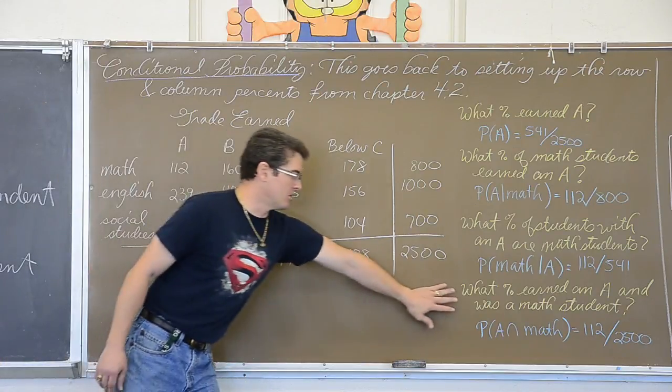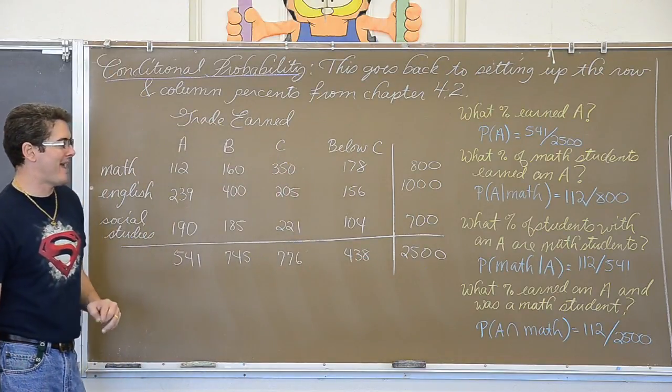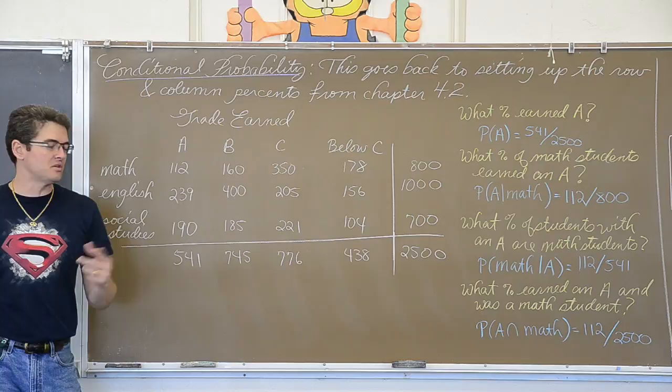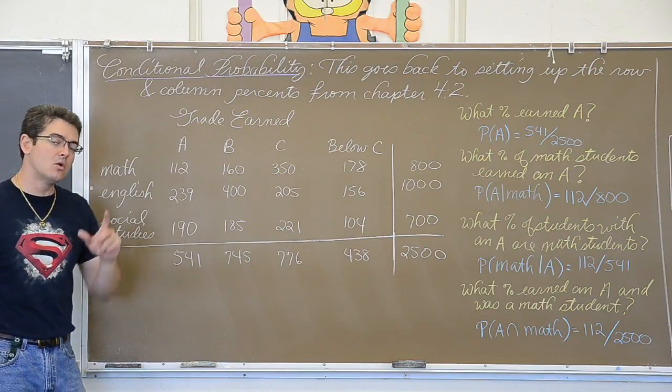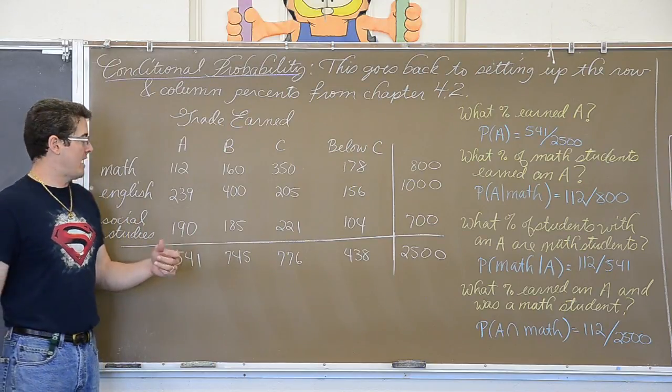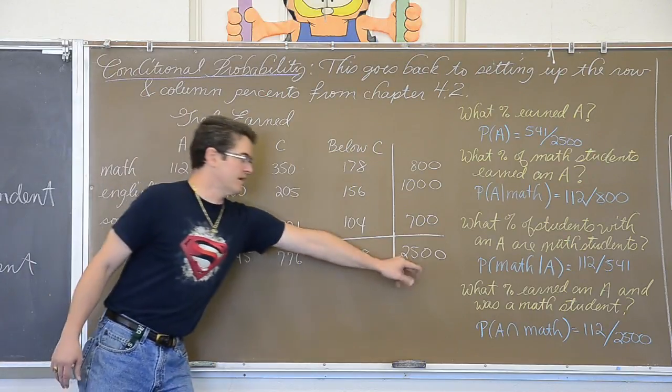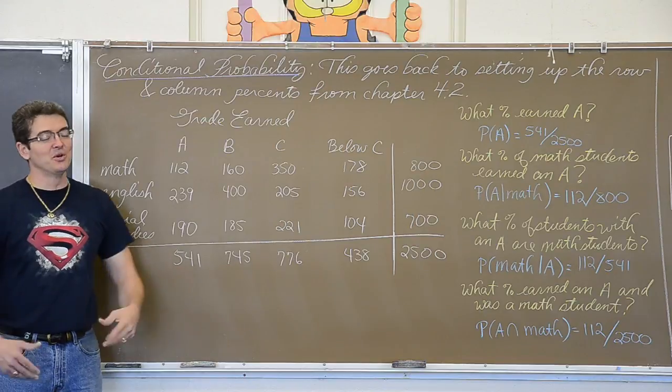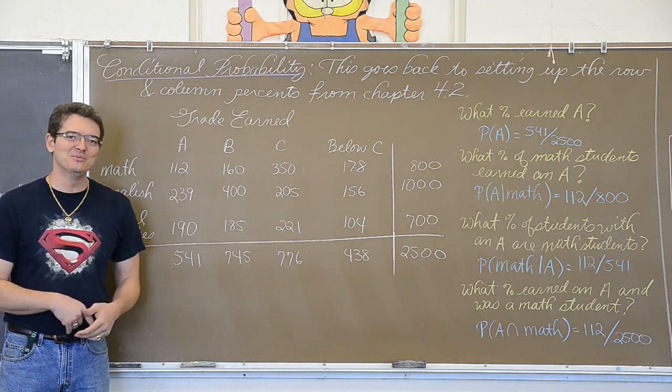And my last example is what percent earned an A and was a Math student. You see the change in language there? There is no condition given. Just what percent of all the students got an A and were in Math. That is 112 out of 2500. I am Mr. Tarrou. Part one is done. Part two is coming up. Woo!